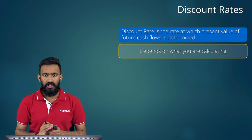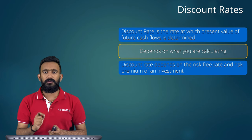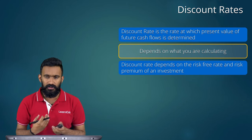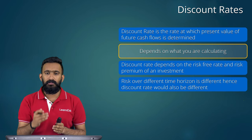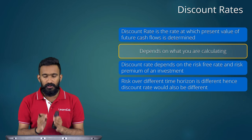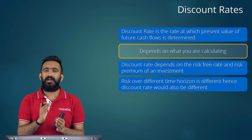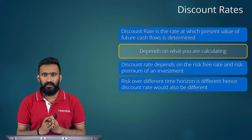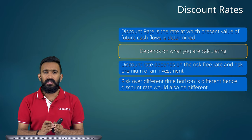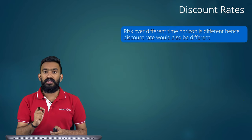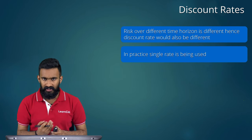The discount rate depends on the risk-free rate and risk premium of the investment. Risk over different time horizons is different; hence the discount rate should ideally also differ across years. In many questions we use a single discount rate, but in practice the discount rate can vary over different years because risk changes across time periods.